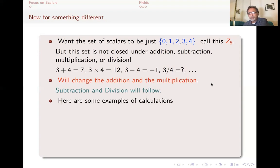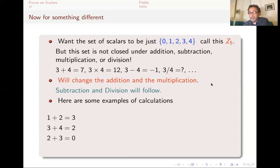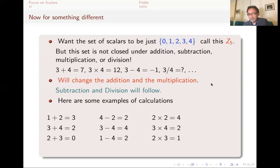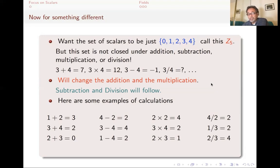Here are some examples — you might want to try to see what rules I'm using. For addition: 1 plus 2 is 3. But 3 plus 4 is going to be 2, and 2 plus 3 is going to be 0. For subtraction: 4 minus 2 is 2, but 3 minus 4 is going to be 4, and 1 minus 4 is going to be 2. Whatever this rule is, at least it's closed — but is it a sensible rule? For multiplication: 2 times 2 is 4, 3 times 4 is 2, and 2 times 3 is 1. For division: 4 divided by 2 is 2, 1 third is 2, and 2 thirds is 4. You might want to pause the video and try to figure out where these come from.